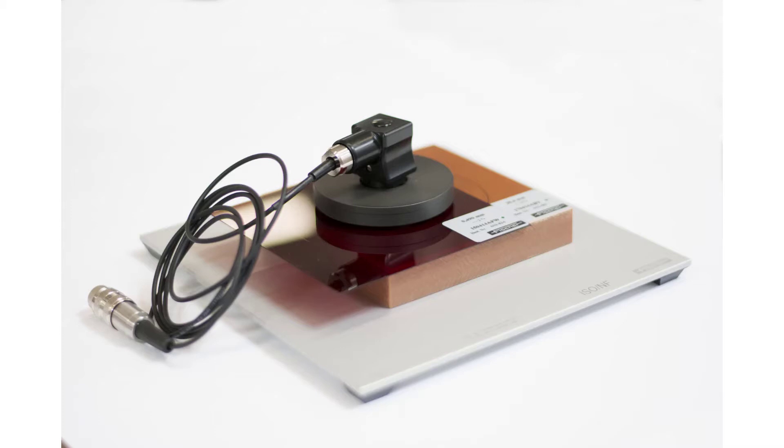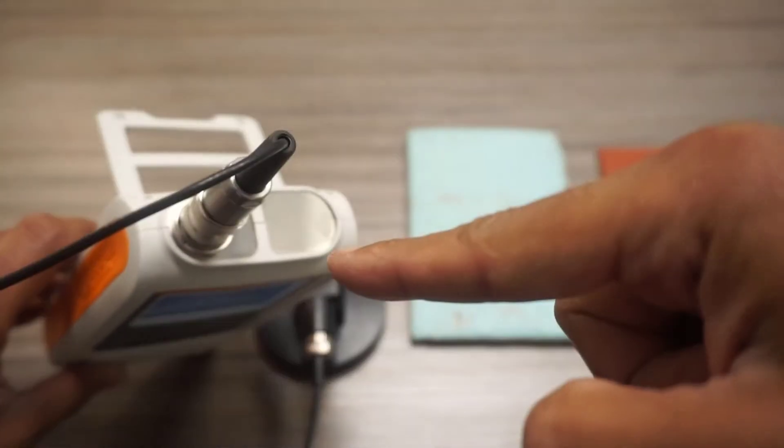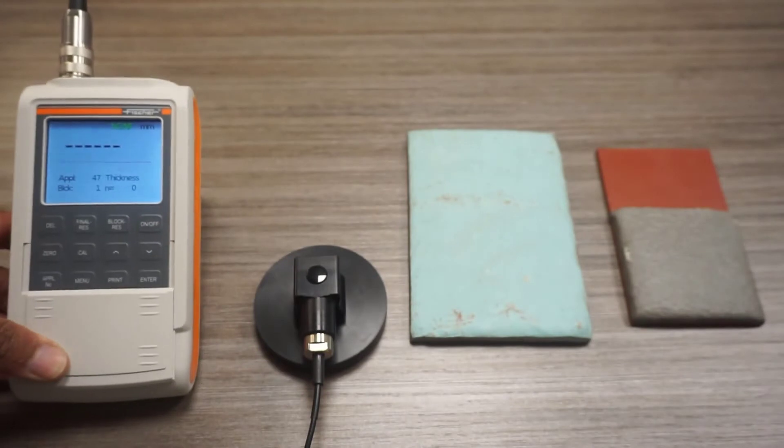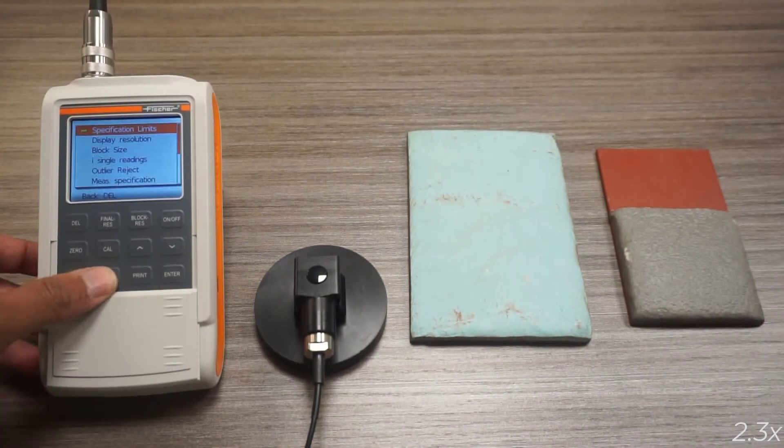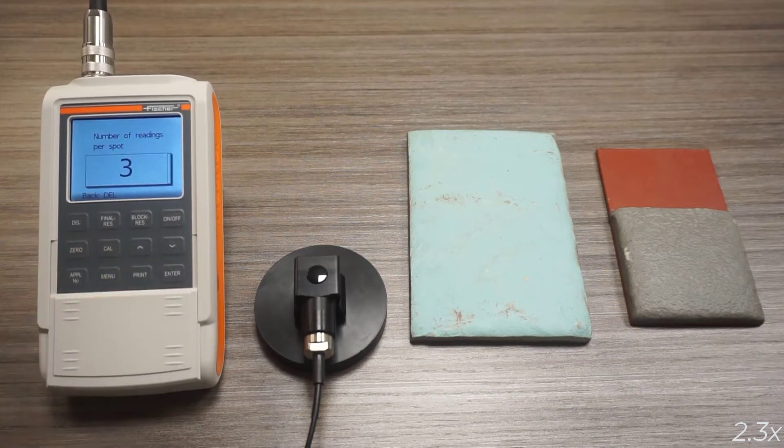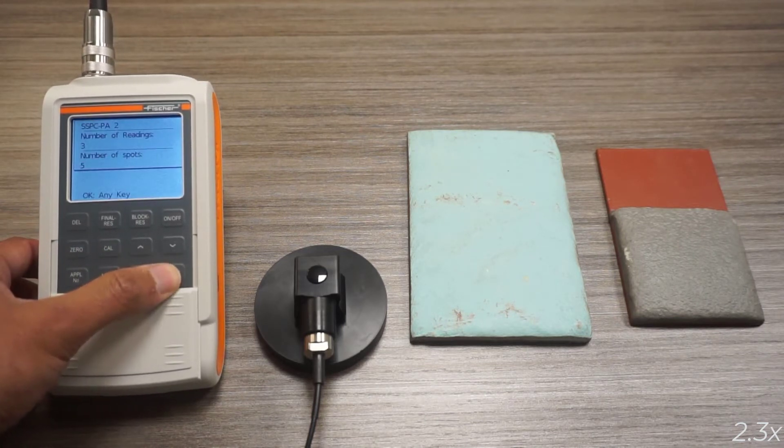The dual scope FMP40's interchangeable probe system offers the flexibility to measure thin as well as thick coatings. An additional feature of the FMP40 is the SSPC PA2 function, which performs and reports the spot measurements required by this industry specification.